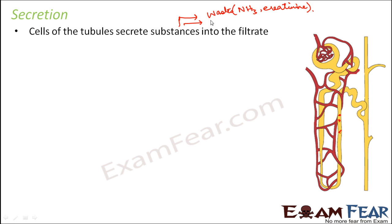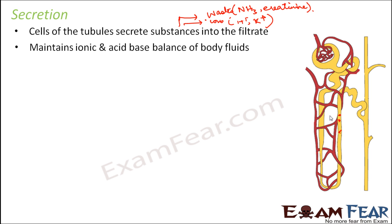These substances can also be ions. When there are excess of any of the ions, whether it is hydrogen ion, sodium ion, or potassium ion, those excess ions need to be removed. So those excess ions can also be secreted into the filtrate. This maintains ionic and acid-base balance of body fluids. Inside the body all the components should be present in the desired amount — neither more nor less. That balance is maintained by this process of secretion.